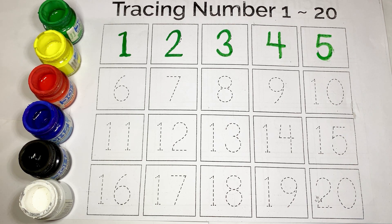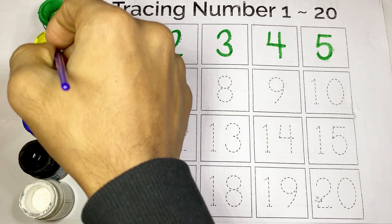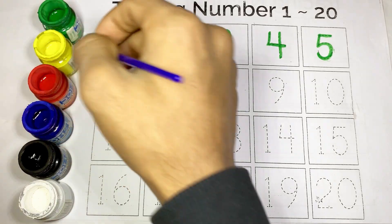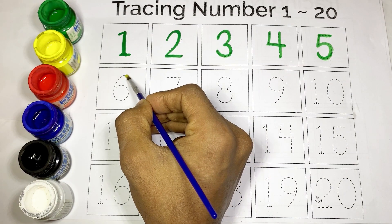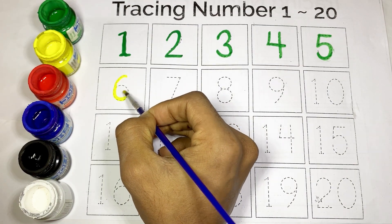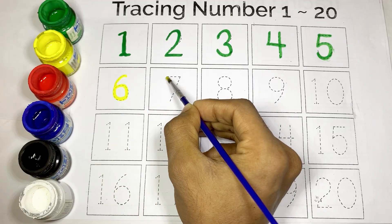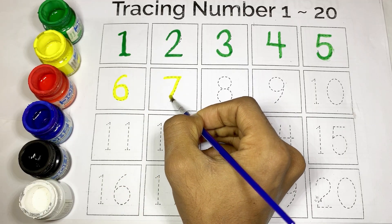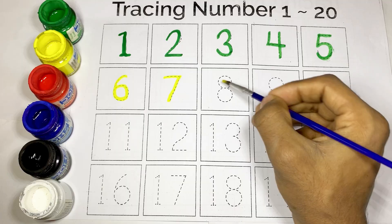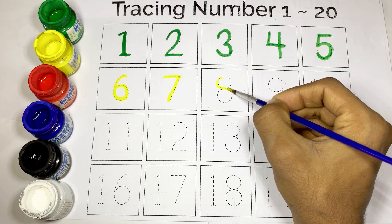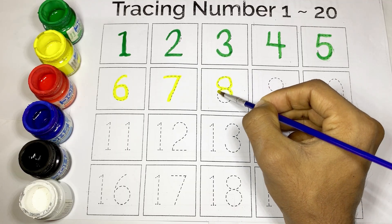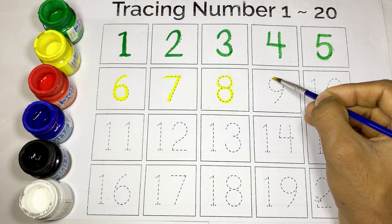Numbers six to ten use yellow color. This is six, S-I-X, six. This is seven, S-E-V-E-N, seven. This is eight, E-I-G-H-T, eight. This is nine, N-I-N-E, nine. This is ten.